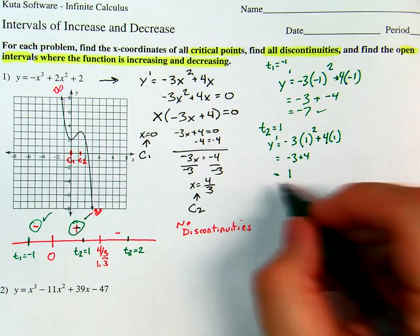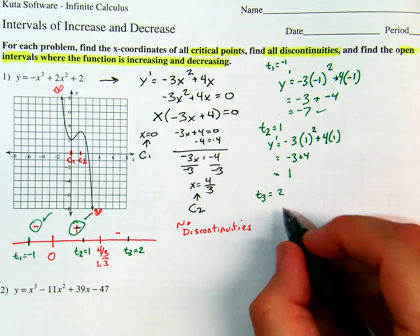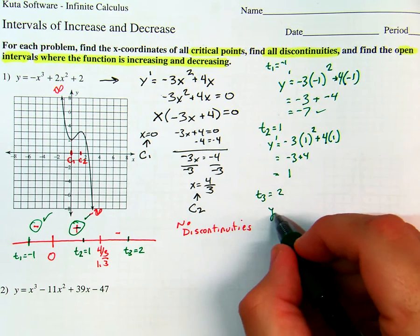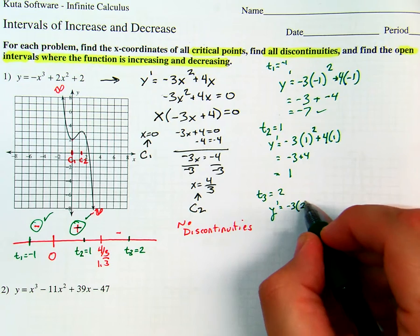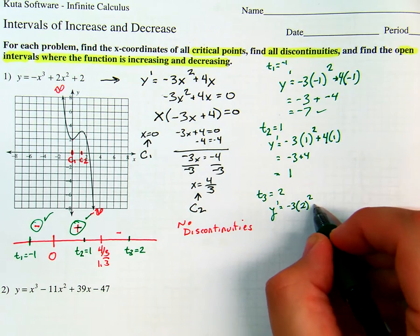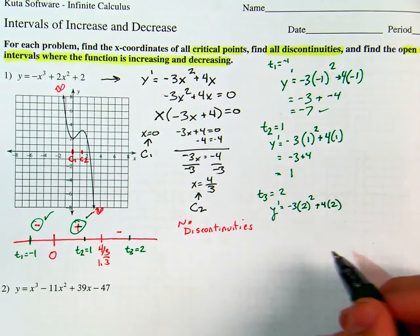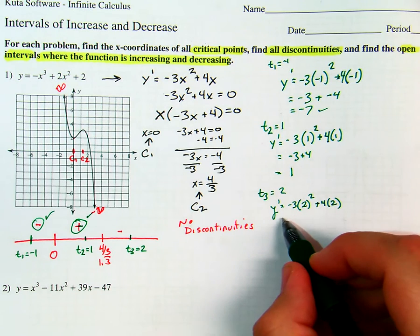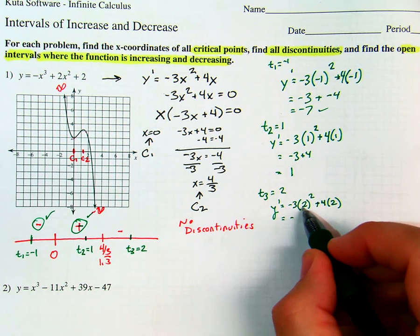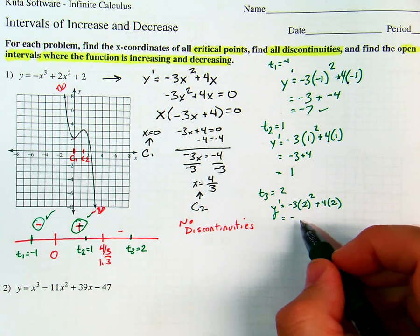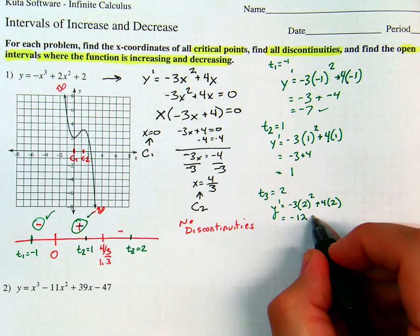T3 equals 2: y prime equals negative 3 times 2 squared plus 4 times 2. That's negative 12 plus 8, which is negative 4. Does that check out? Yes.